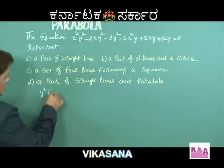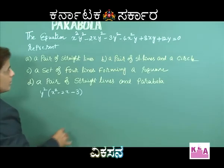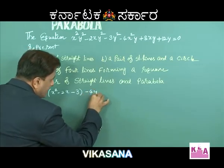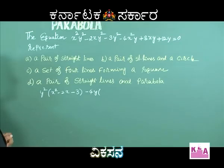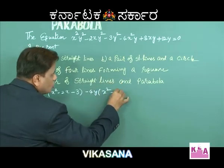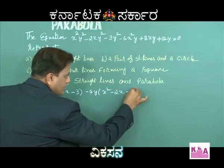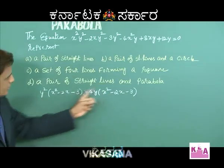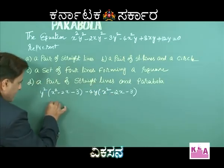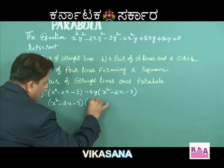Take y² as a common factor from the first three terms, giving y²(x² - 2x - 3). In the remaining three terms, take -4y as a common factor, giving -4y(x² - 2x - 3). So x² - 2x - 3 is again a common factor.